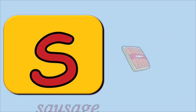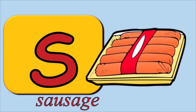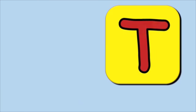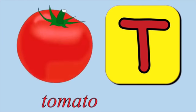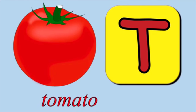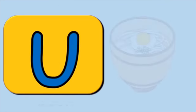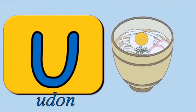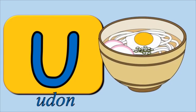S is for sausage. S, s, s. T is for tomato. T, t, t. U is for udon. U, u, u.